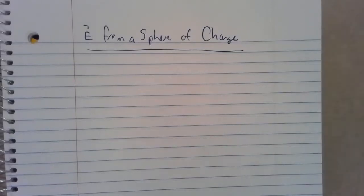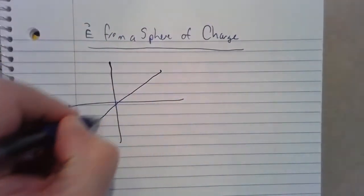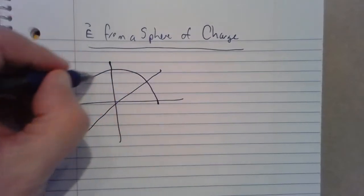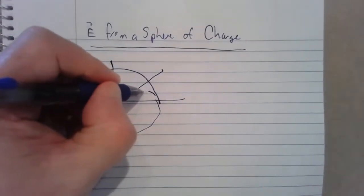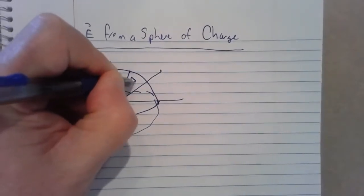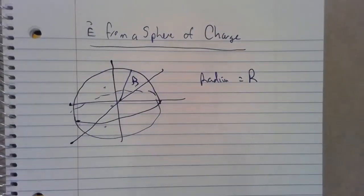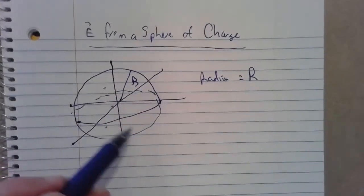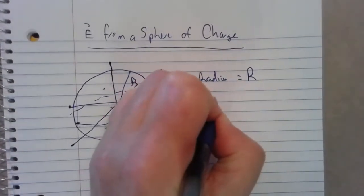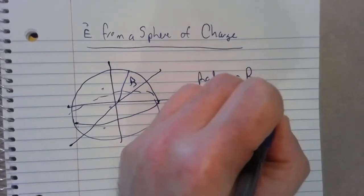We are going to use Gauss's Law to find the electric field from a sphere of charge. At the origin in our x, y, z plane, we're going to have a sphere of radius capital R. I want to find the electric field caused by the sphere of charge, and my total charge will be capital Q.